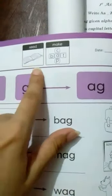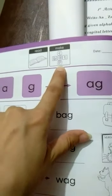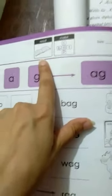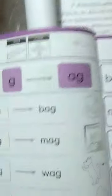Read the icons. It is read and make. Read ka matlab hai padhna aur make ka matlab hai words make karna.